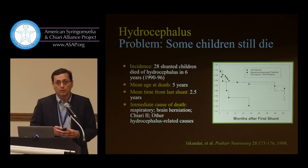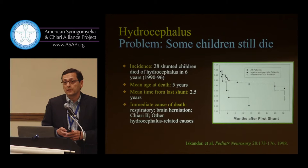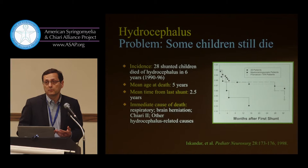We looked at this starting when I was in Jerry Oaks' program as a fellow, and found 28 shunted children who had died specifically from hydrocephalus — from shunt malfunction. The question I asked was: could we have prevented this?